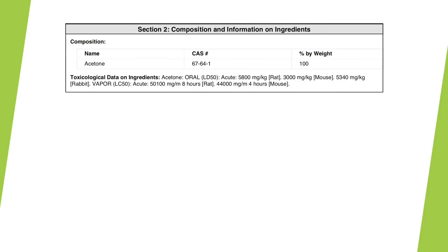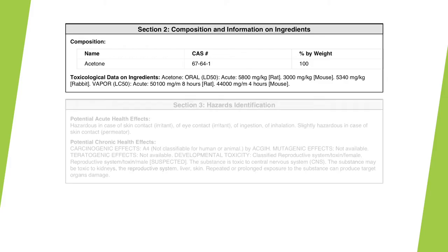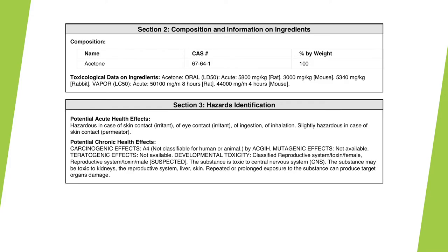Section 2 breaks down the composition by ingredients. Section 3 details health hazards and how to identify them. This is usually separated into potential acute and chronic health effects.